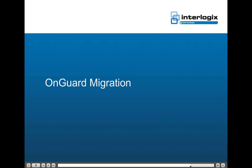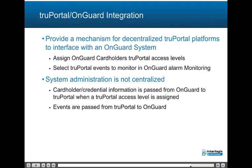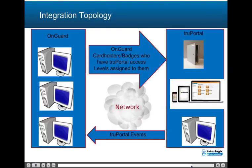OnGuard migration: the TruePortal to OnGuard integration provides a mechanism for decentralized TruePortal platforms to interface with an OnGuard system. This is accomplished by assigning OnGuard cardholders to TruePortal access levels and selecting TruePortal events to be monitored in OnGuard alarm monitoring. System administration is not centralized, as cardholder credential information is passed from OnGuard to TruePortal only when a TruePortal access level is assigned, and TruePortal events are passed to OnGuard as they occur. Both systems are on the same shared network; cardholders and credentials are passed when a TruePortal access level is assigned to them, and events generated by the TruePortal system are then passed to OnGuard alarm monitoring.